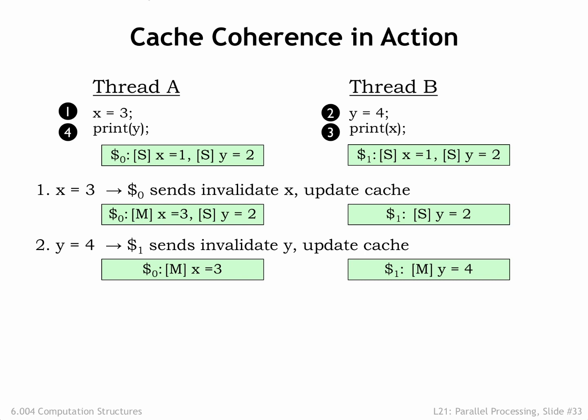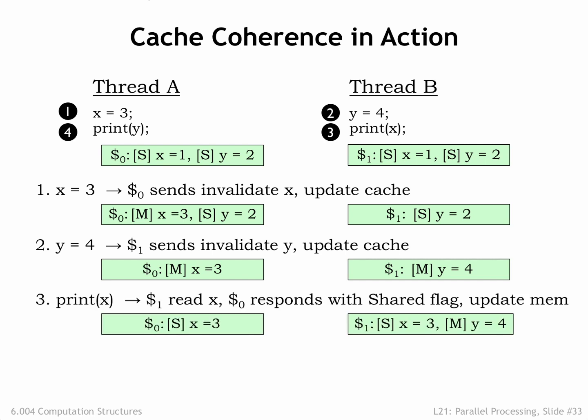In step 2, thread B changes Y to 4. Since this location is marked as shared in the local cache, cache 1 issues an invalidate transaction for location Y to the other caches, giving it exclusive access to location Y, which it changes to have the value 4. In step 3, execution continues in thread B, which needs the value of location X. That's a cache miss, so it issues a read request on the snoopy bus, and cache 0 responds with its updated value, and both caches mark location X as shared. Main memory, which is also watching the snoopy bus, also updates its copy of the X value.